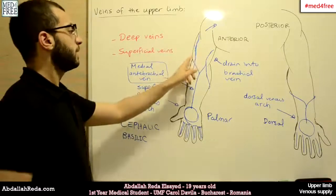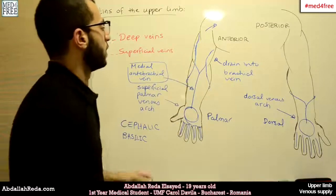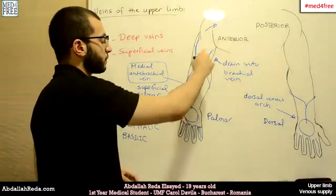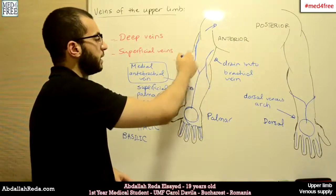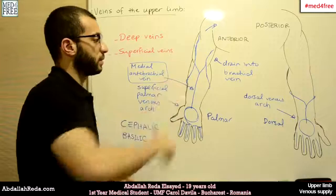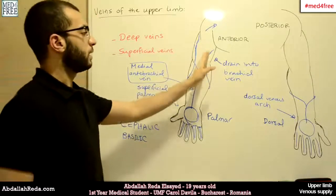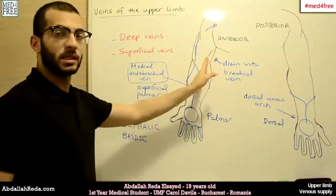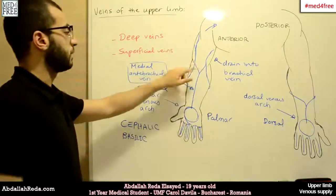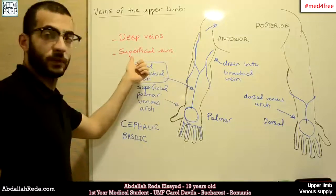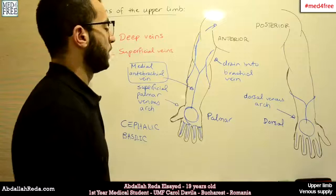It's important to mention that the basilic and cephalic veins pass through the bicipital grooves: one goes into the medial bicipital groove and the other into the lateral bicipital groove. They accompany the same elements in the groove and are the most superficial elements in the groove, because they are superficial veins.